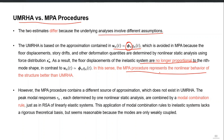However, modal pushover analysis contains a different source of approximation not present in UMRHA. In UMRHA, we directly get the time history of each response, sum them, and get the combined time history of the combined response — so no modal combination rule is involved. In MPA, we directly get the peak responses of each mode, so in order to combine those peak responses we must use a modal combination rule, for example SRSS or CQC, similar to response spectrum analysis.